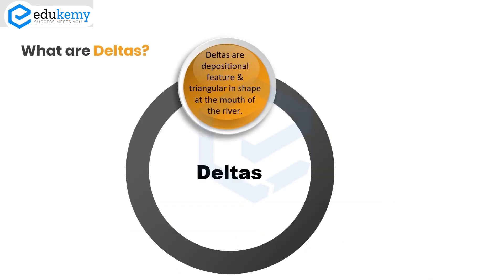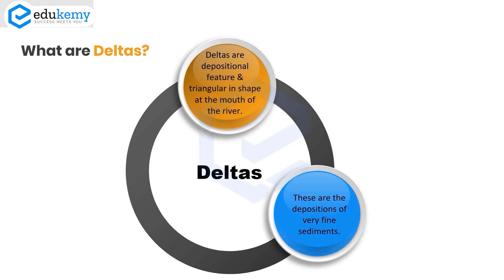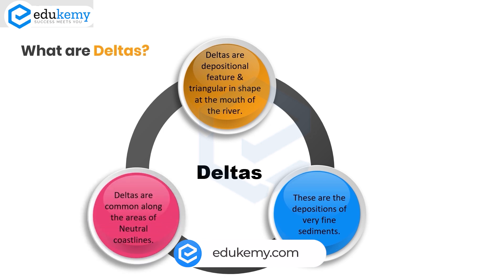Deltas are essentially depositional features. They are triangular in shape at the mouth of the river or where the river meets the sea. Deltas are typically depositions of very fine sediments.